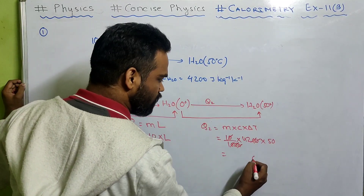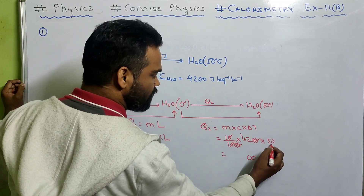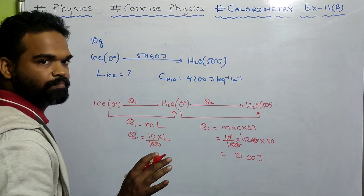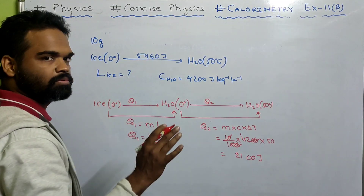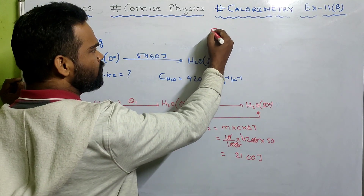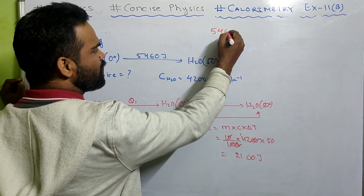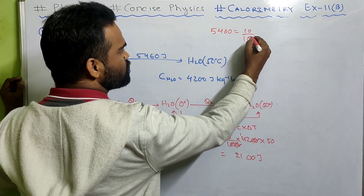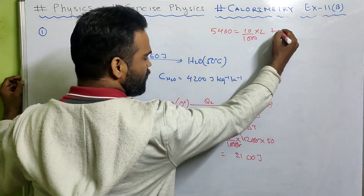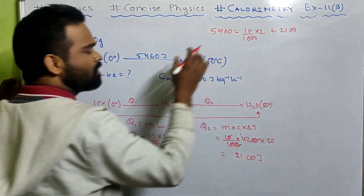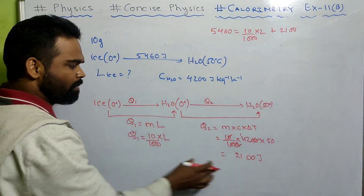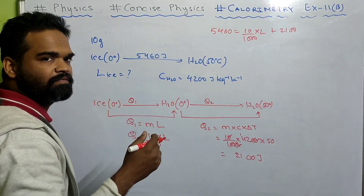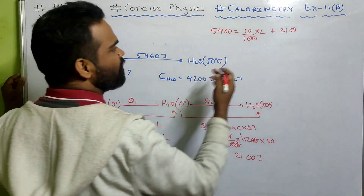So Q2 works out to 2100 joule. The total heat is Q1 plus Q2, which equals (10/1000) into L plus 2100. Total heat is given as 5460 joule.